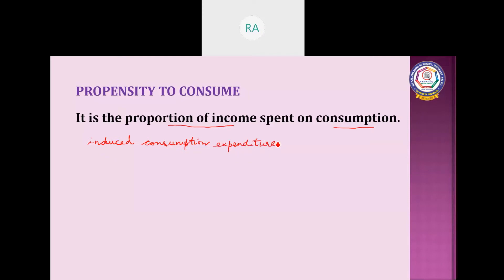The expenditure which rises with a rise in income is called induced consumption expenditure. Suppose income rises, then consumption expenditure also rises. For example, if income rises from 1,000 to 2,000, our consumption expenditure also rises from 500 to 700. That is what is called induced consumption expenditure.